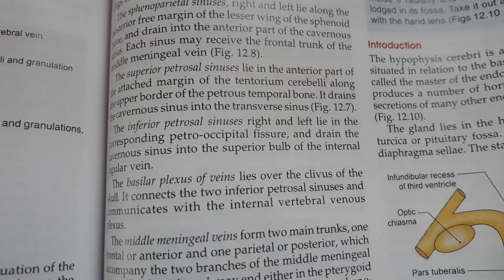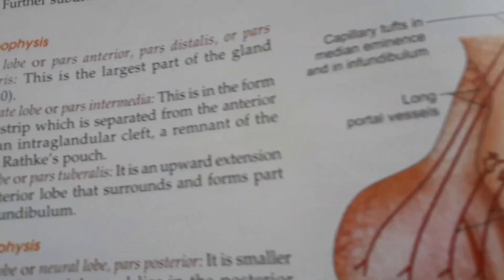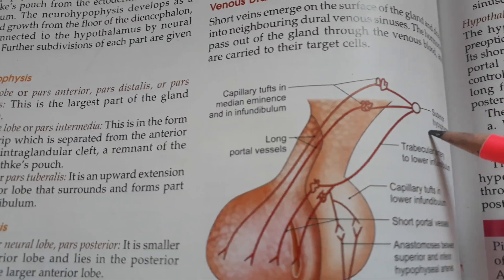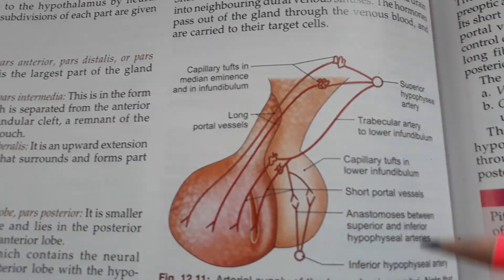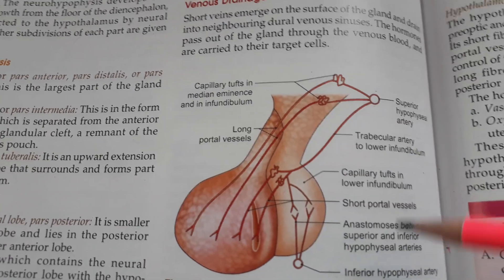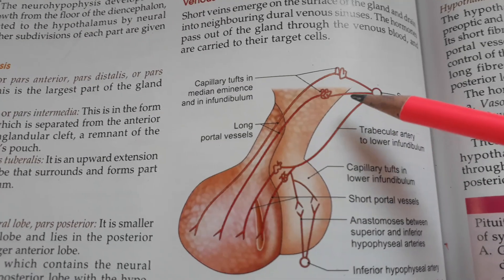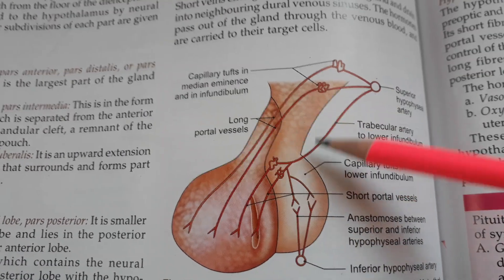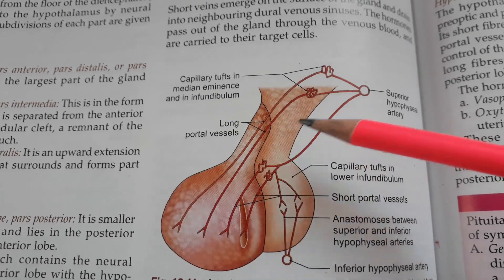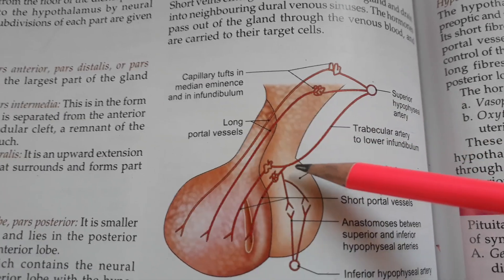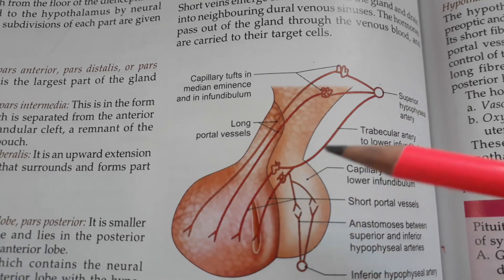Blood supply: the pituitary gland is supplied by the superior hypophyseal artery and the inferior hypophyseal artery. Venous drainage occurs via the nearby dural venous sinuses.